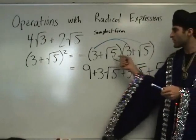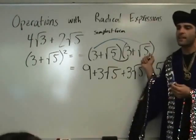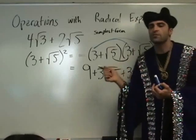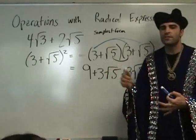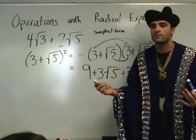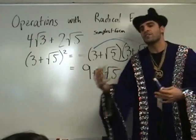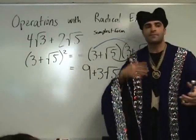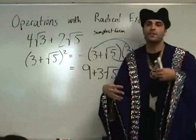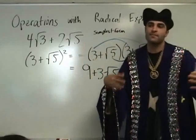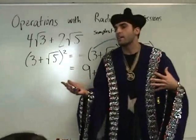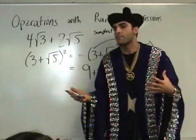Keep in mind: whenever you multiply two square roots that are the same thing, it just turns out to the number underneath. So the square root of three times the square root of three is three. Square root of four times square root of four is four. Square root of ten times square root of ten is ten. Square root of banana times square root of banana is banana.